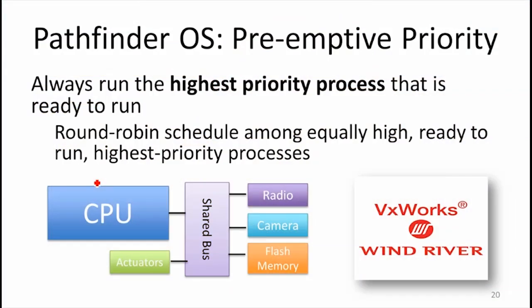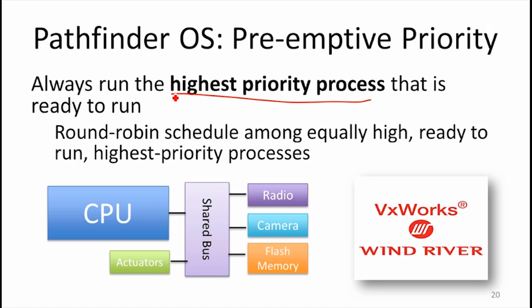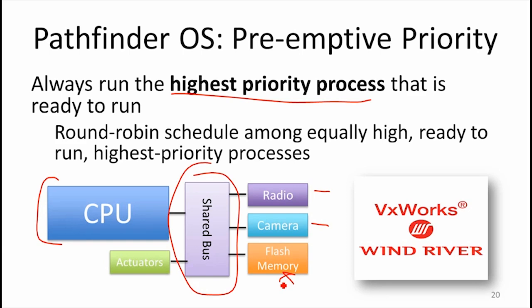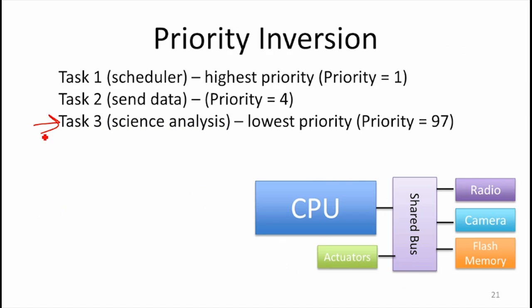The scheduler on the Pathfinder was using preemptive priority scheduling, exactly the rules I described, where the highest priority process always gets to run and lower priority processes only run when the higher one's done. The rover was taking pictures, recording data from Mars, and writing them into flash memory. There were processes that would do scientific analysis on the data in that flash memory and figure out what's worth sending back, since you couldn't send back everything due to low bandwidth between Mars and Earth. Those scientific analysis tasks were running at low priority — we'll call it priority 97.